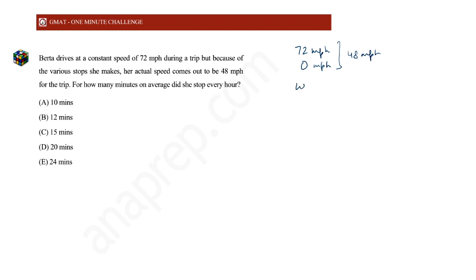So w, the time for which she stops, upon the time for which she's speeding—I'm finding these weights. That equals 72 minus 48 upon 48 minus 0. Check the weighted averages formula: w1 upon w2 equals c2 minus c average upon c average minus c1.